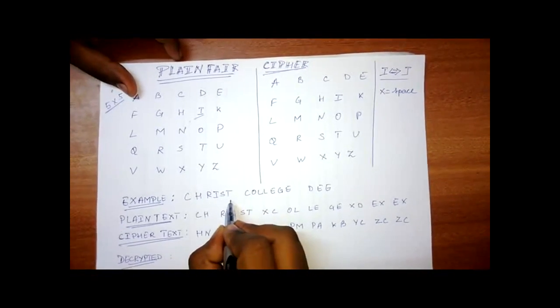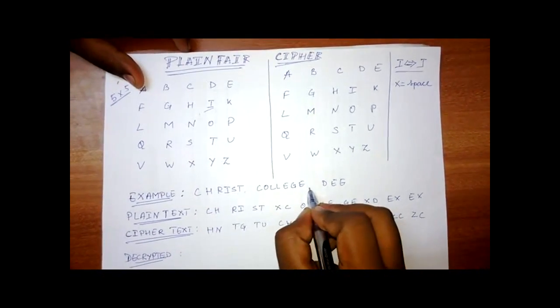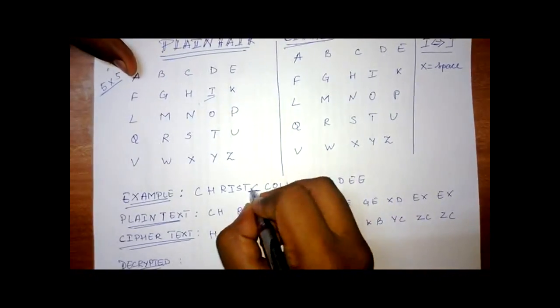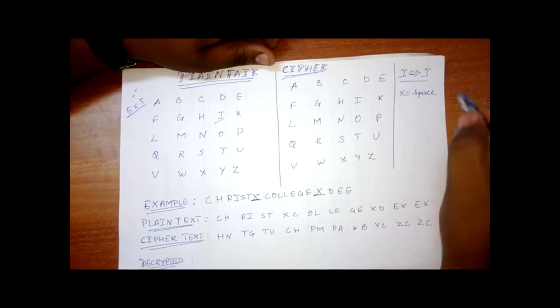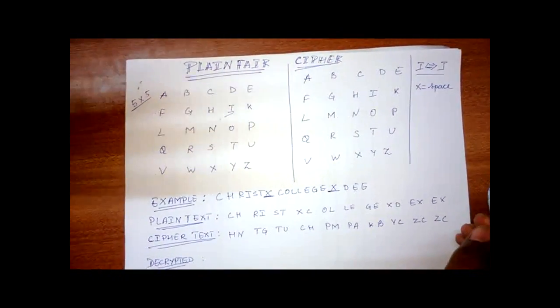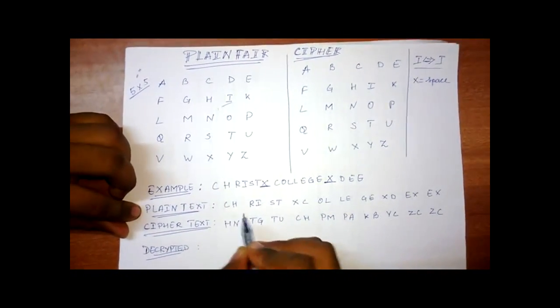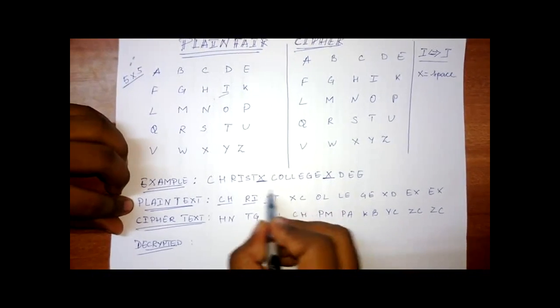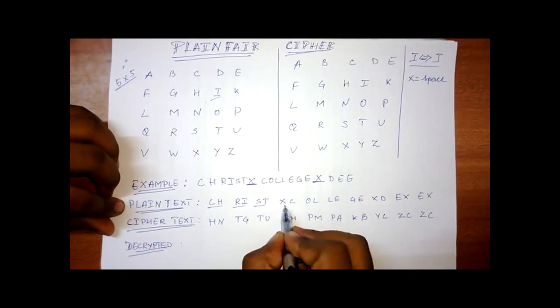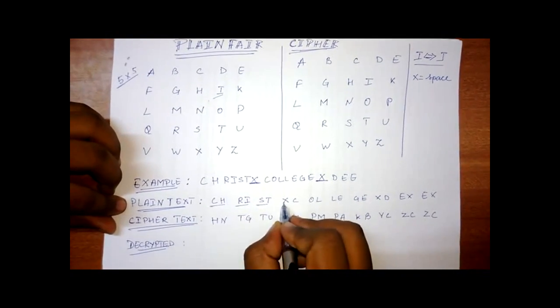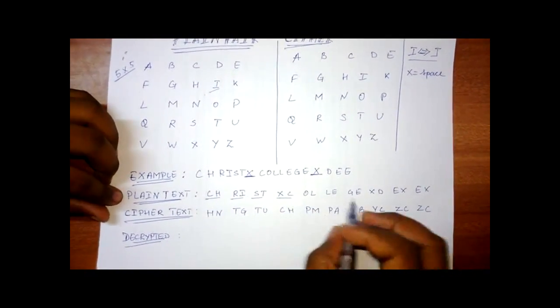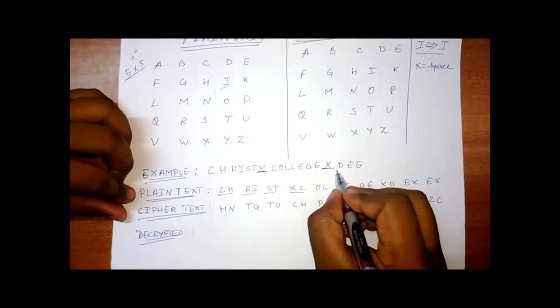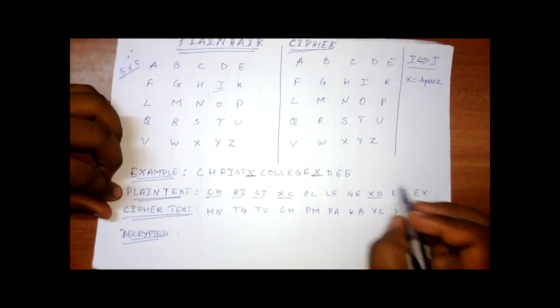Okay. Second thing we have, when we have a space in the plain text, like here we have for example Christ College DEE. So we have two spaces. So we will count the space as X. So the plain text is taken in pairs of two. So we have CH as one pair RI XT. So now we have a space between Christ and College. So we will count the space as X. So we will take space as X and the next word that is C. So that becomes XC as one pair of plain text and same way. In the same way between College and DEE, we have a space. So we will count X and D as one pair.